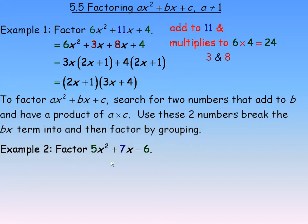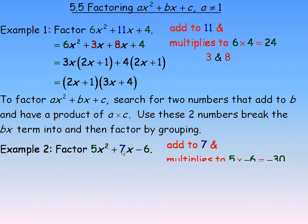In example number 2, we are asked to factor 5x squared plus 7x minus 6. We search for two numbers that add to 7 and have a product of negative 30, since 5 times negative 6 is negative 30. Notice the product is negative, so one of the two numbers is positive and one is negative. They add to a positive value, so the larger number must be positive.